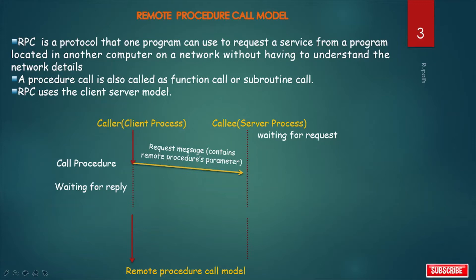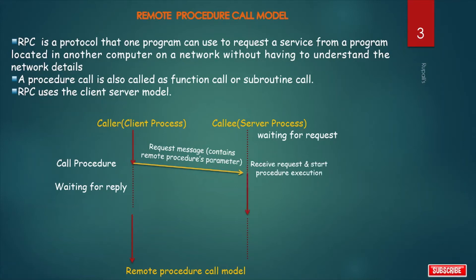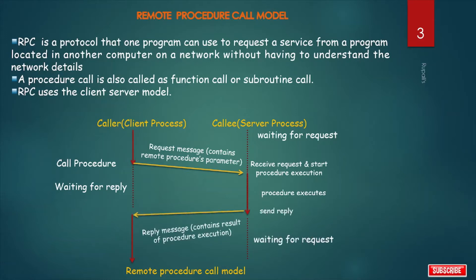The client sends a request message that contains the remote procedure's parameters. The server process receives the request and starts procedure execution. When the procedure finishes and produces its results, the results are transferred back to the calling environment, where execution resumes as if returning from a regular procedure call. The server sends a reply message containing the result of procedure execution, then goes back to the waiting-for-request state.